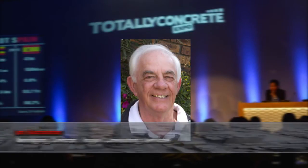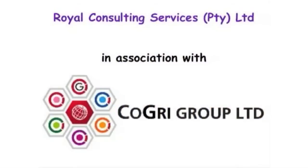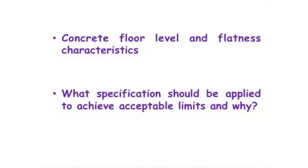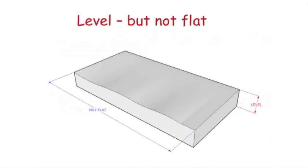Before we start, I need you to have a mental picture of what we're talking about in terms of level and flatness, because the two basically go together when interpreting the quality characteristics of an industrial concrete floor. This floor is level because it more or less stays within a certain band — it can be classified as level, but it's not flat.